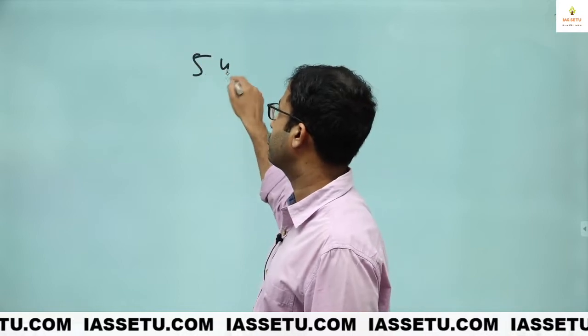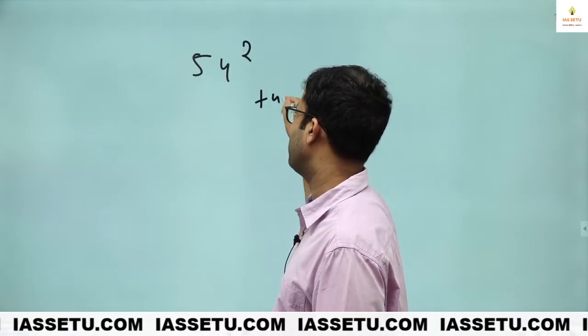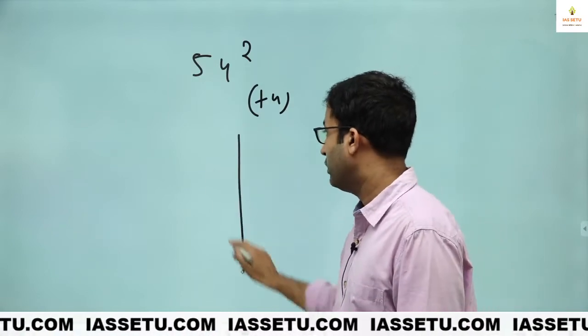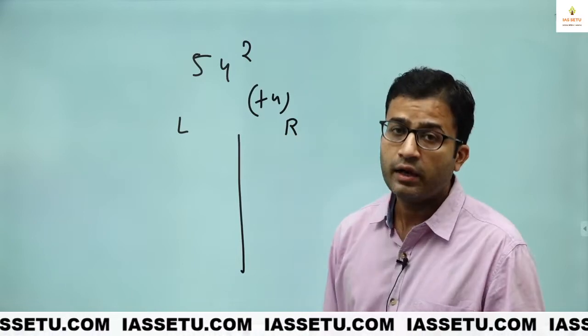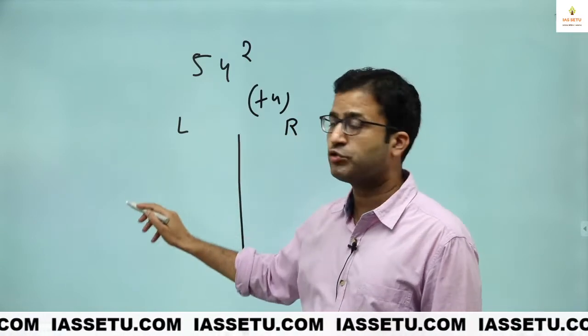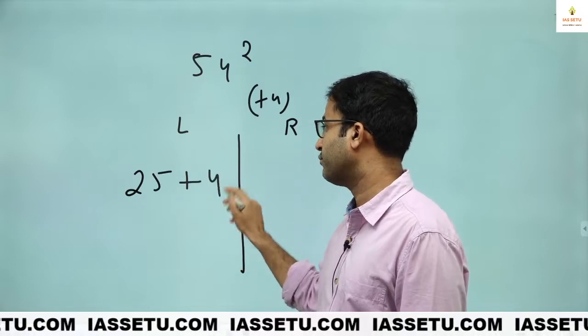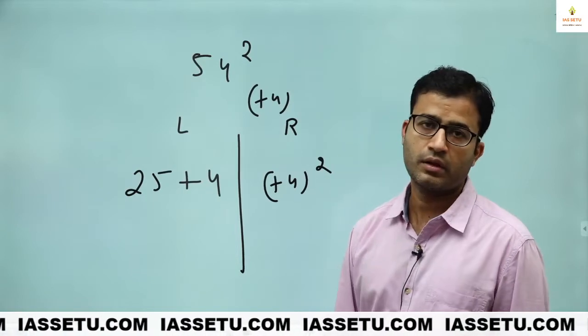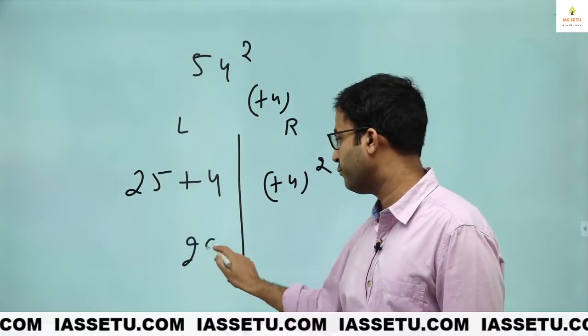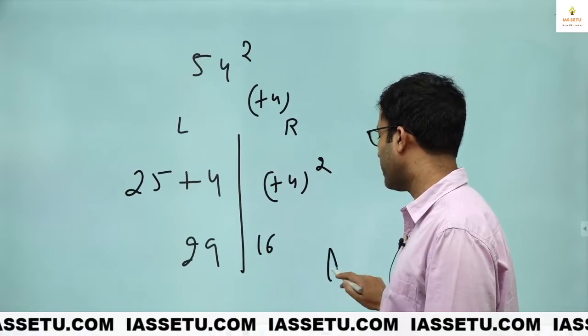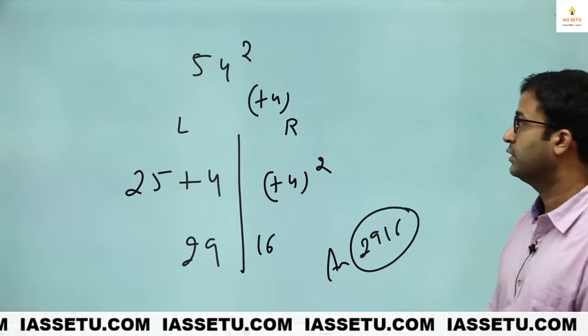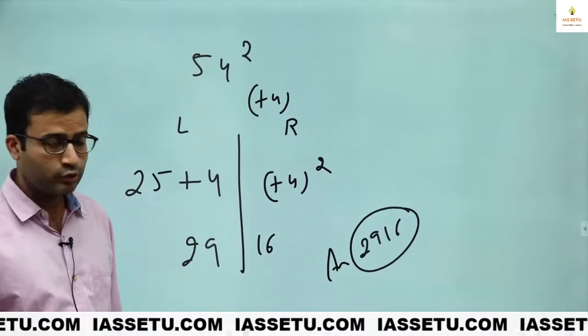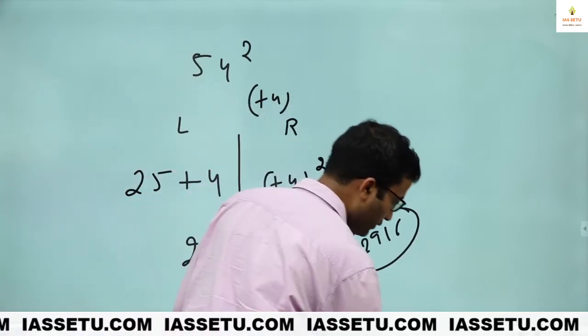First, take 54 square. So this is plus 4. 50 plus 4. 50 plus 4 whole square type. Left hand side, right hand side. Left hand side, we take 50 base 25. 25 plus 4. Simple. Right hand side, we take 4 square. As simple as that. This is 29. 4 square is 16. So your answer is 2916. 54 square is 2916. Let me take 2, 3 extra questions. You will understand.